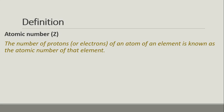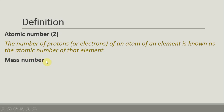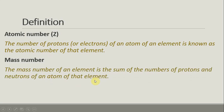The atomic number is the number of protons and the number of electrons of an element. The number of protons equals the number of electrons — this is known as the atomic number of that element. The mass number is the sum of the number of protons and neutrons of an atom of that element.